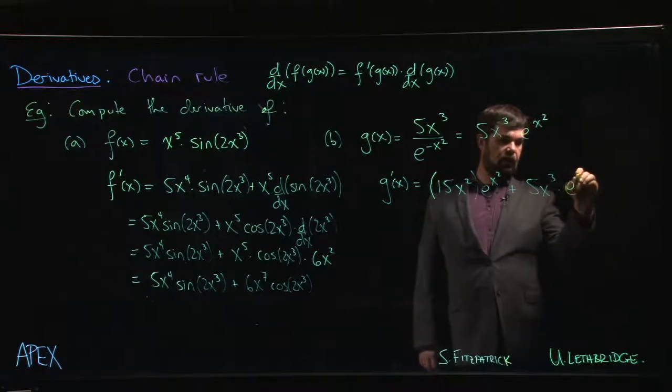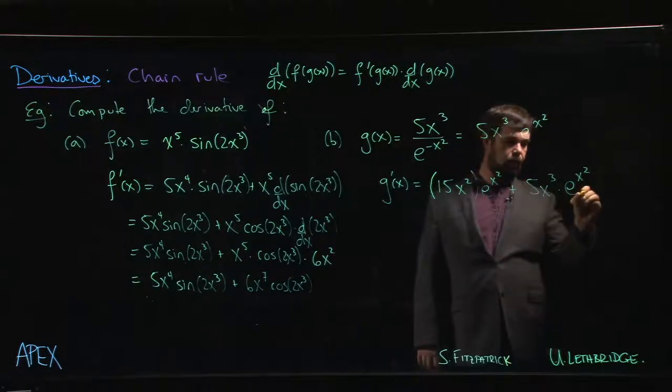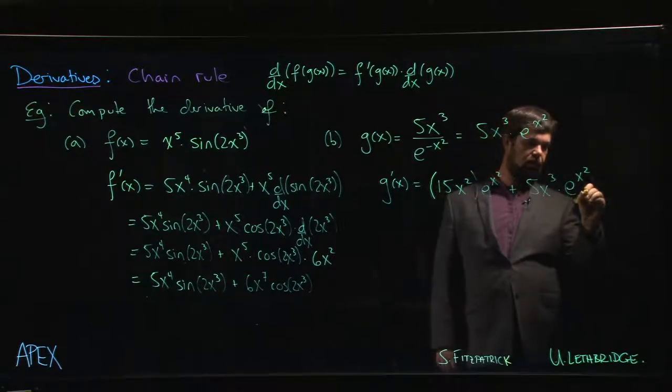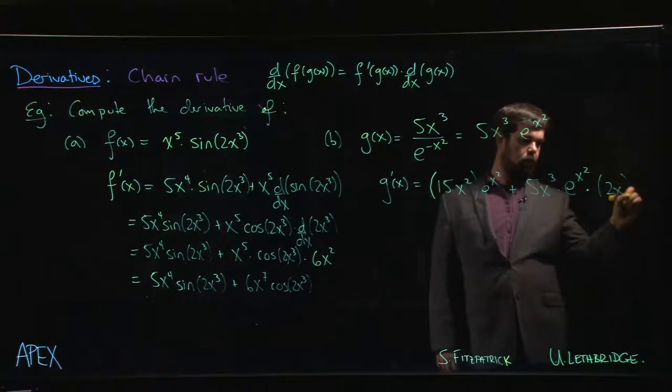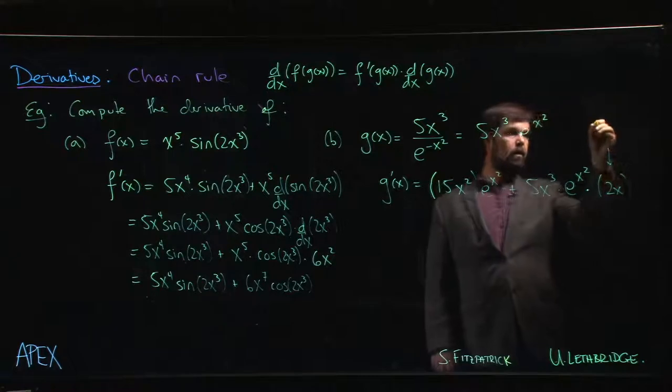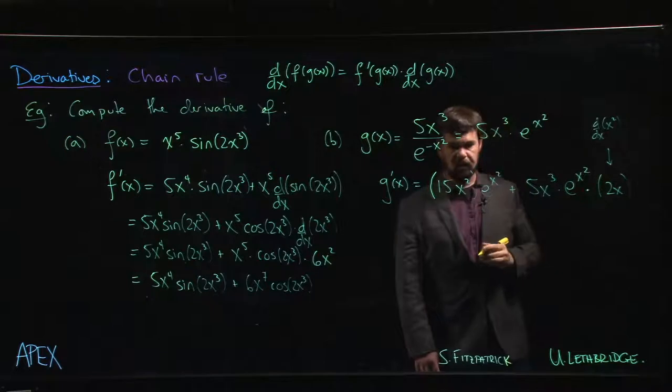We evaluate that derivative using the same argument that we started with x squared. But then we need to multiply by the derivative of the inside. So the derivative of x squared is 2x.